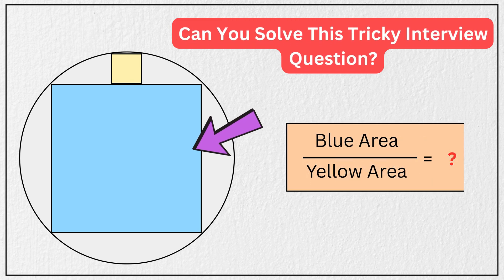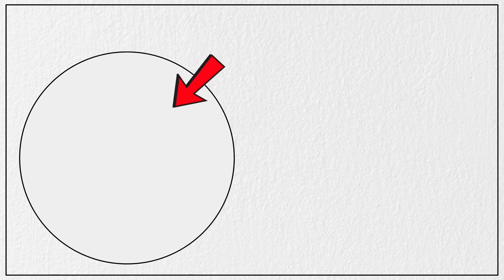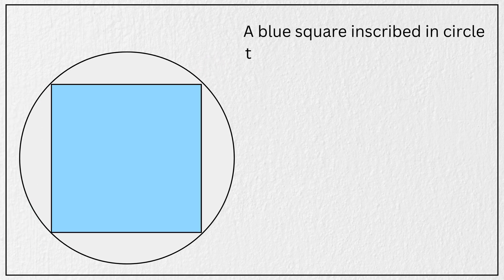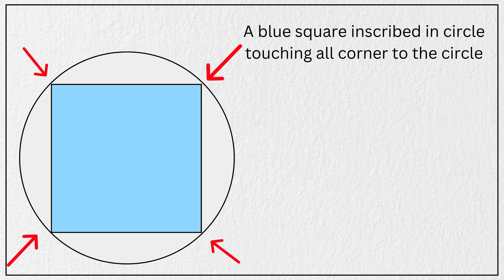Can you solve this tricky geometry question asked in a job interview? We are given a circle like this. Inside this circle, a blue square is placed in such a way that all four corners of the square touch the circle like this.